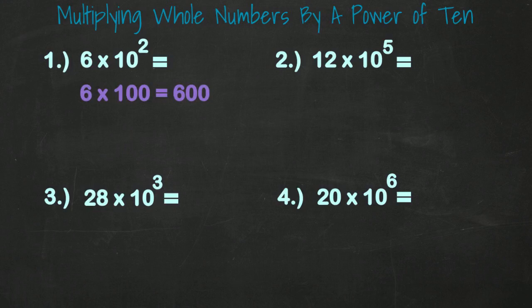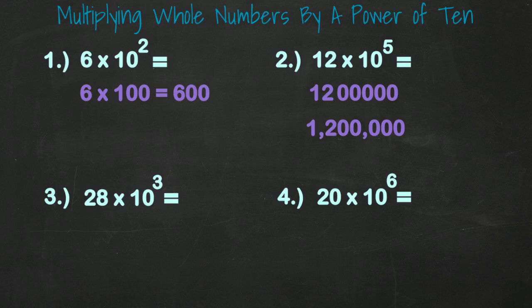Next example, 12 times 10 to the 5th. We take 12 and we add 5 zeros after our answer and it's 1,200,000.